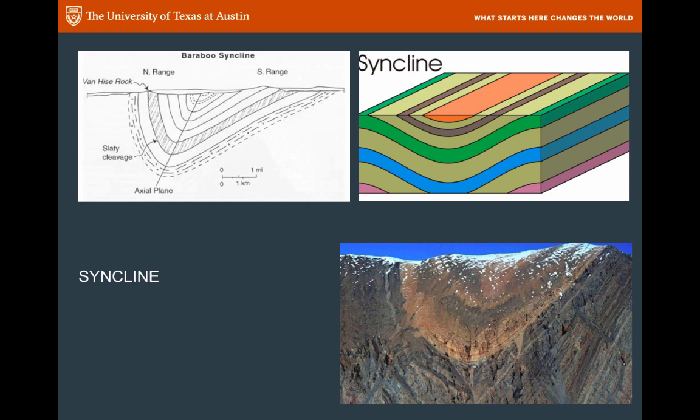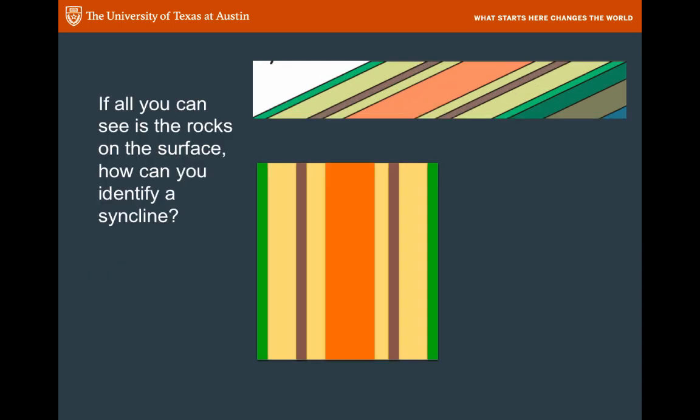Look at that upper right picture with the different colored layers — we're going to pull it out in the next view. There is that block diagram at the top, and I have just flipped it and turned it into a map. The diagram at the bottom might be a map that a geologist draws of this particular syncline, where you have the older green rocks, then middle-aged brown, then young orange, then middle-aged brown and older green again across a map view.